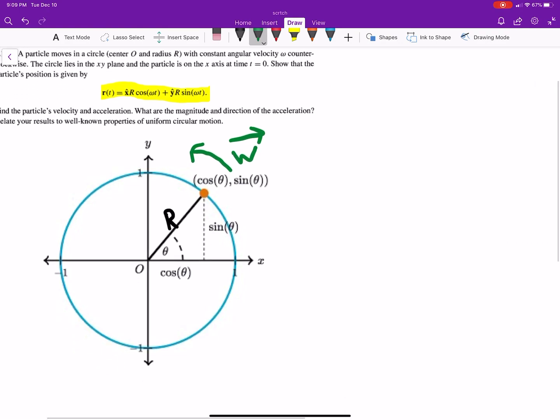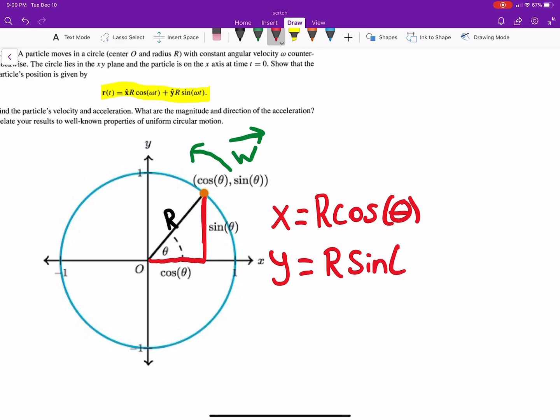We can look at our particle here and see it can be thought of as a y component and an x component. The x component, if we do some right triangle trig, is going to be the hypotenuse r times cosine theta, and y using the same logic is going to be r sine theta.